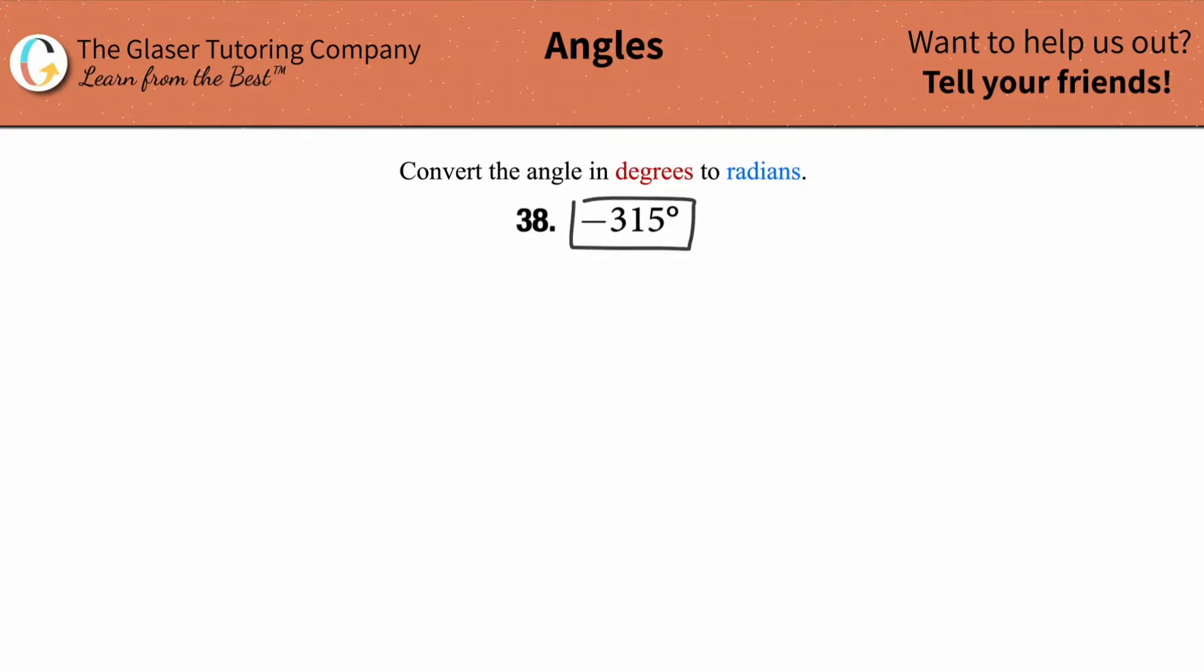What is negative 315 degrees in radians? Well, it's easy to figure out.